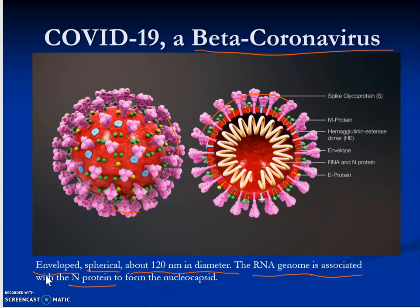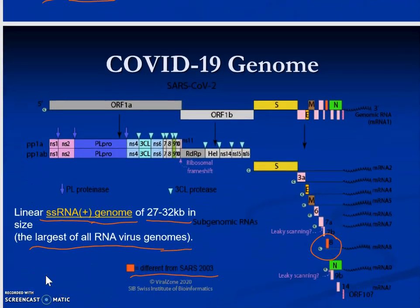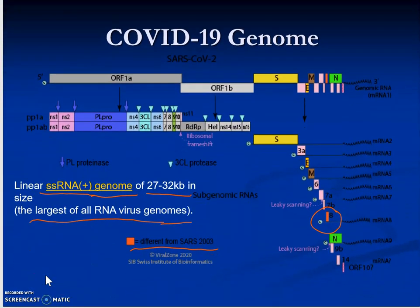The RNA genome is associated with the N protein to form the nucleocapsid. One thing to point out is that the part of the genome that differs from the 2003 SARS virus is only a very small portion shown in red — everything else is identical. COVID-19 has a linear single-stranded RNA genome, RNA plus-strand (sense strand), of about 27 to 32 kilobases, making it a very large RNA virus.